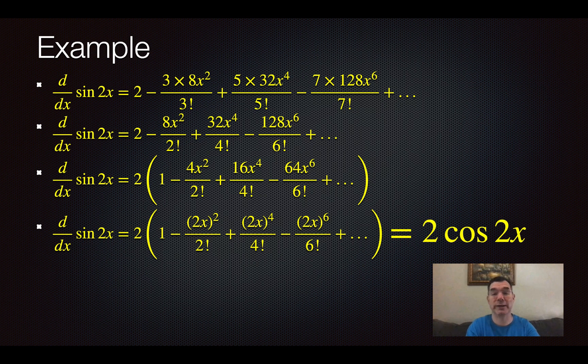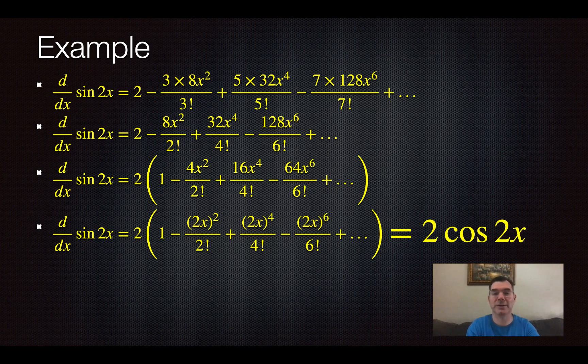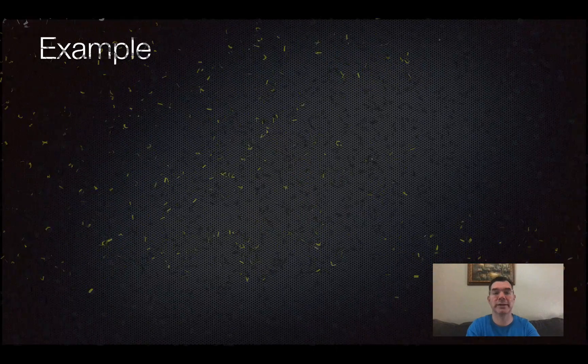That is actually an exact copy of what 2 cos 2x would look like. So I've basically shown that the derivative of sin 2x is 2 cos 2x because the Maclaurin series do follow that pattern. That's not a formal proof, but it's just kind of comforting to know that it still works for Maclaurin series.